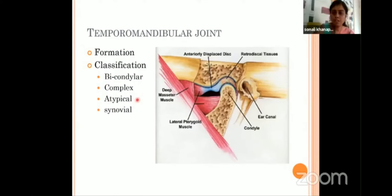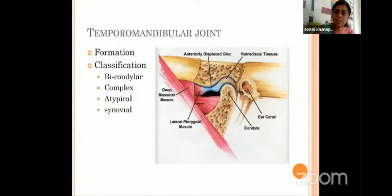Then this is a complex variety of joint. Why? Because the joint cavity is divided by fibrocartilage, or an articular disc — that is why it is called a complex variety. Then it is an atypical variety of synovial joint. Normally, the articular surfaces are lined by hyaline cartilage, but in the temporomandibular joint the surfaces are lined by fibrocartilage — you need to remember this. That is why it is an atypical variety of synovial joint. The joint cavity is filled with synovial fluid — depending upon the cementing material between the two articular processes, we classify the joint.